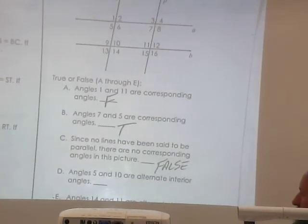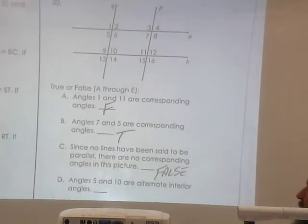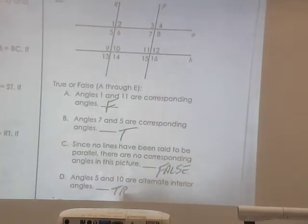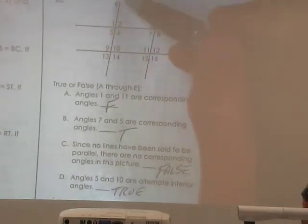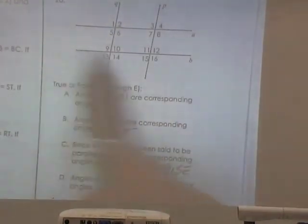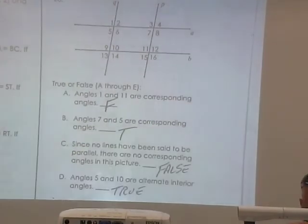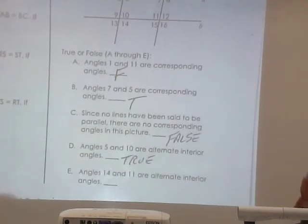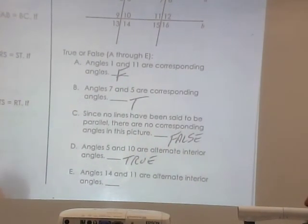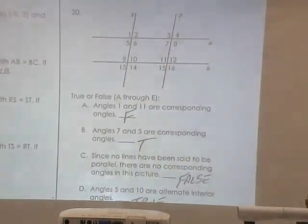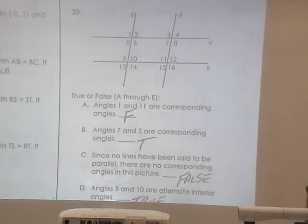Number letter D. Angles 5 and 10 are alternating interior angles. True. True. Right? 5 and 10. This will be my transversal. So these would be my two lines. So they're definitely interior. And they're alternating because one's on one side of the transversal, those on the other side. And letter E. Angle 14 and 11 are alternating interior angles. 14 and 11. True. True, right?